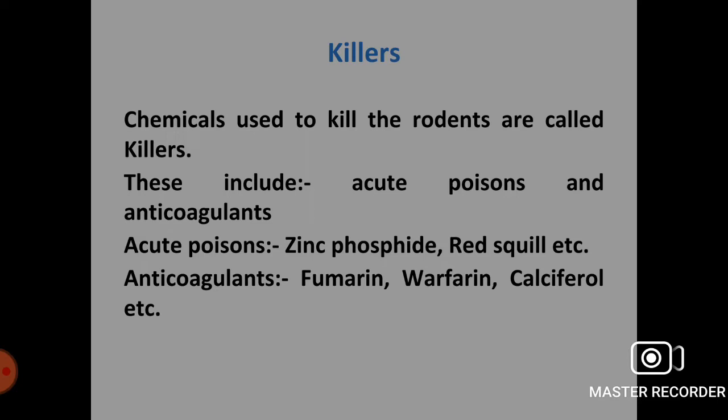Killers are chemicals used to kill rodents, and include acute poisons and anticoagulants. Acute poisons include zinc phosphide and red squill. Zinc phosphide kills rodents by releasing phosphine in the stomach, causing injury to kidneys, liver and lungs. Red squill is one of the oldest rodenticides and is safe for non-target species, commonly called silmurine. Anticoagulants prevent coagulation of blood in cases of internal and external bleeding, and include fumarin, warfarin and calciferol.